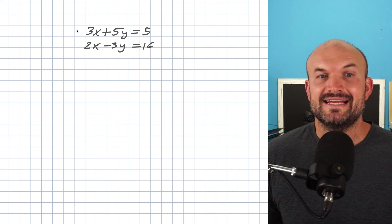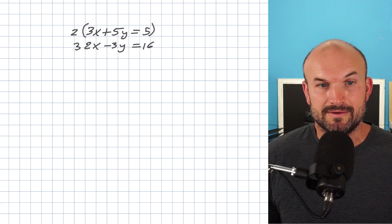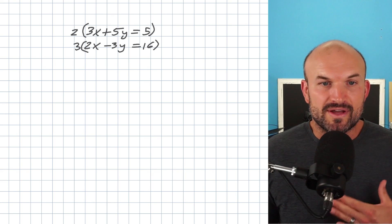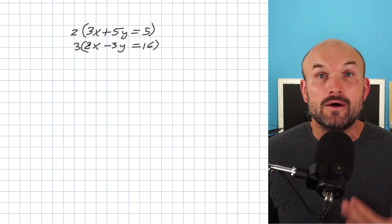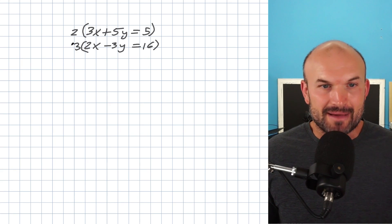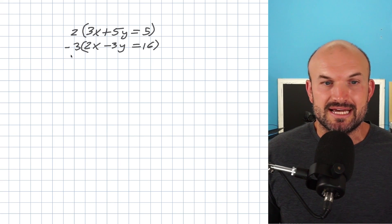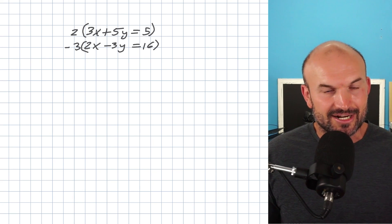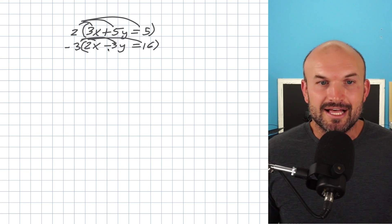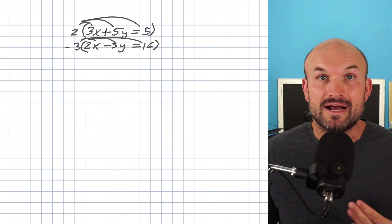I need to get both coefficients to be six, the least common multiple. To get three to be six, I multiply by two. To get two to be six, I multiply by three. I do not like subtracting two equations — I always like to add. So I do not want both coefficients to be positive 6x. I want one of them to be negative so I can add them and eliminate the variable. Which one you choose to be negative doesn't really matter. So I'll use my parentheses here, distributing my scalars of two and negative three to produce those equivalent equations and rewrite my new system.